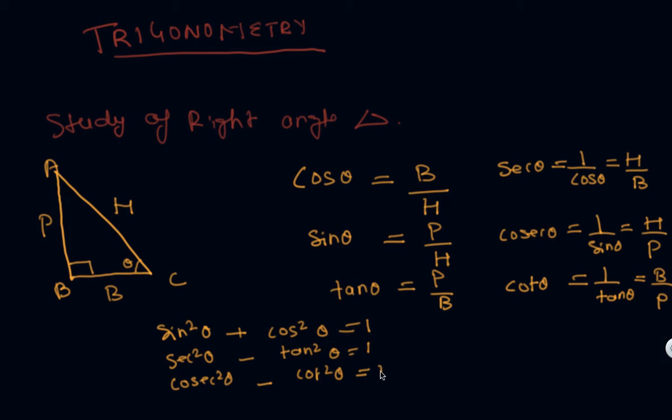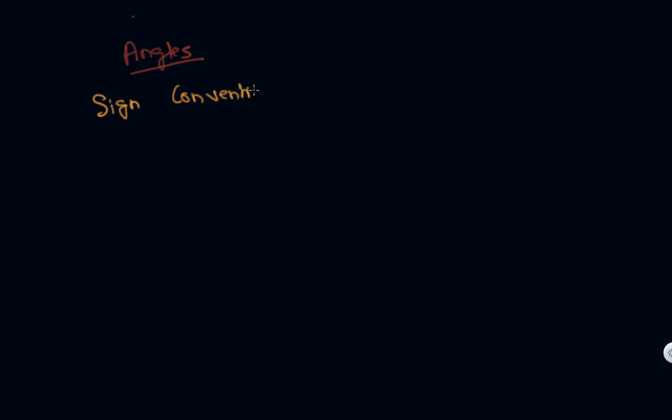Those are the three relationships we studied in the 10th standard. Now let's begin with what's new in the 11th standard — a new topic, which is angles. Let's start with the sign convention of angles. By sign convention, we mean we are going to study two kinds: positive angles and negative angles.